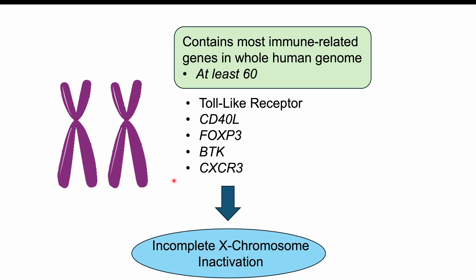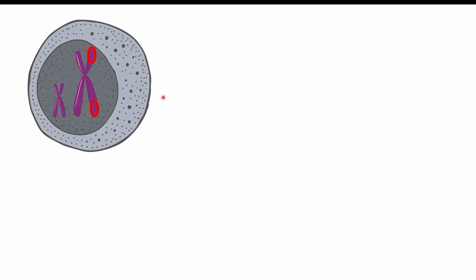But the problem is that, and we didn't mention this before, there can be incomplete X chromosome inactivation. So what does that mean? So if we were to look at this particular immune cell, and one of the X chromosomes in the immune cell has become a Barr body, it's become inactivated or condensed. The other X chromosome is still activated, and there are certain genes on that X chromosome that are involved in immune cell functioning.